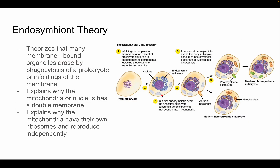The endosymbiont theory explains how the mitochondrion and endoplasmic reticulum arose. It theorizes that many membrane-bound organelles arose through phagocytosis of a prokaryote or through enfoldings of the membrane. This explains why the mitochondria and nucleus have double membranes, and why mitochondria have their own ribosomes and can reproduce independently. The theory proposes that a proto-eukaryote engulfed what was once a bacterium — a prokaryote — that became the mitochondrion.